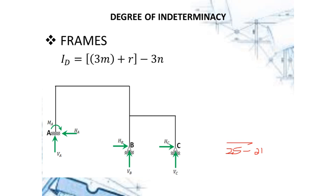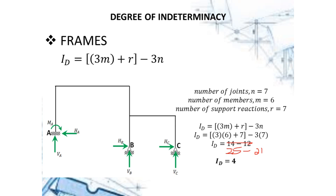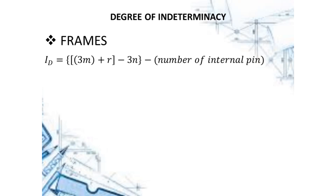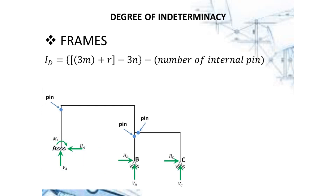For this frame example, there are seven joints. In some frames, additional internal pins are included in the structure to lessen the degree of indeterminacy. For frames with internal pins, the equation becomes: ID is equal to 3m plus r minus 3n minus the number of internal pins.